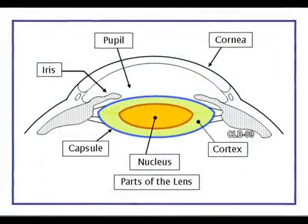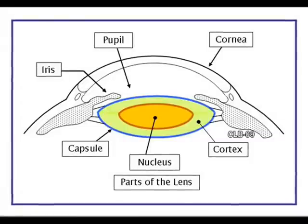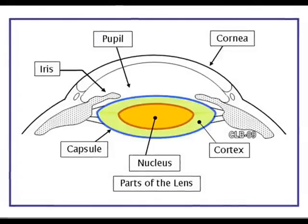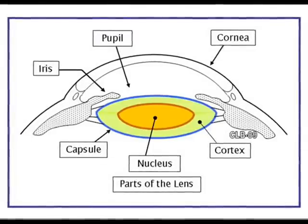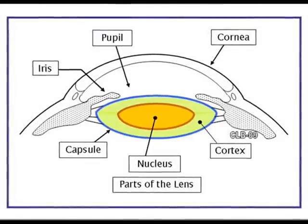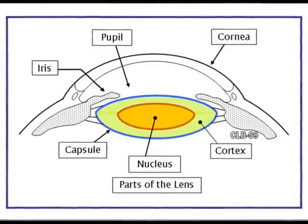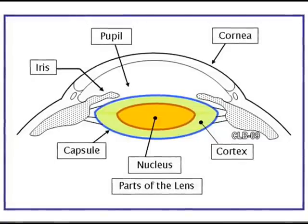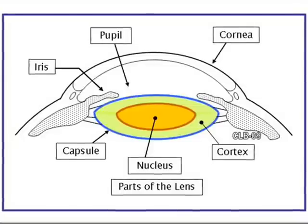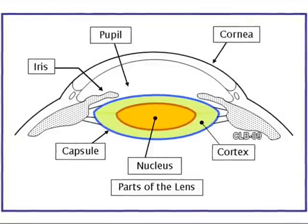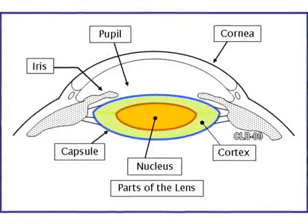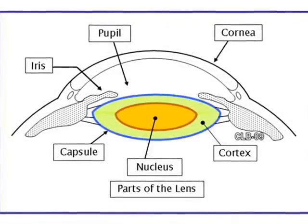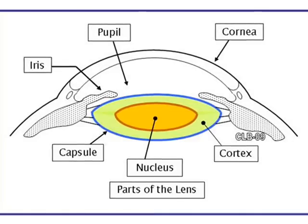To understand what goes on in cataract surgery requires a basic understanding of the anatomy of the lens. This illustration is meant to show that the lens has distinct parts. A Californian might make an analogy to an avocado: there's a skin layer on the outside called the capsule, a hard pit in the center called the nucleus, and a layer of softer material in between.